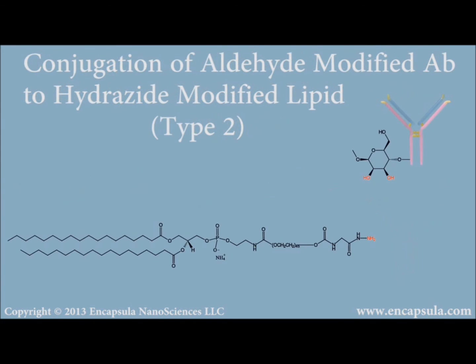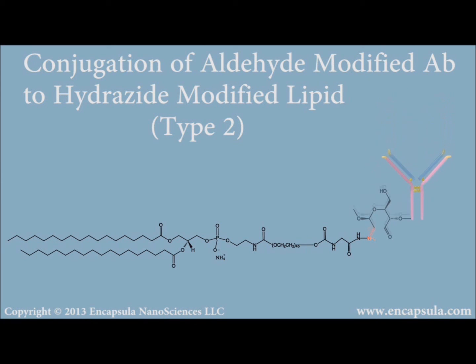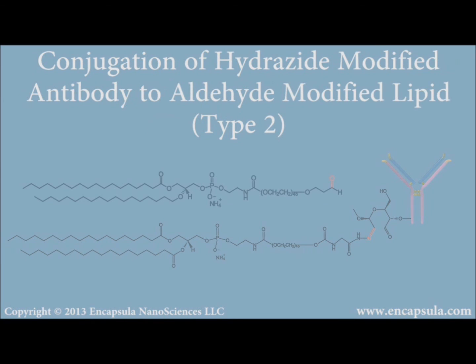Sugar moieties present in the Fc region of the antibody can be oxidized under mild conditions using periodate to introduce reactive aldehyde residues into the antibody. Subsequent conjugation to hydrazide-containing liposomes produces hydrazone linkages.